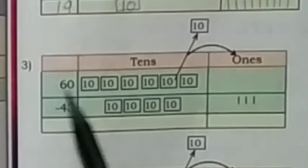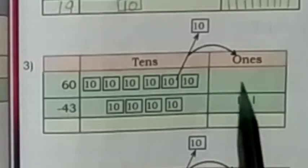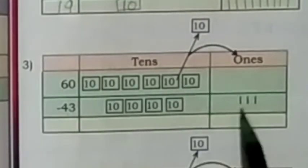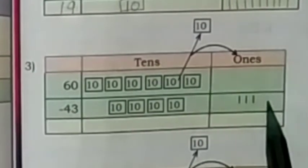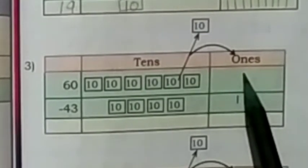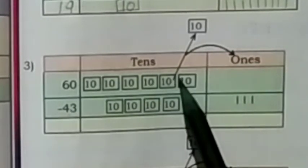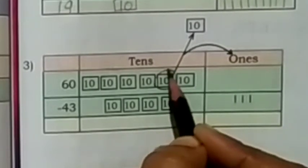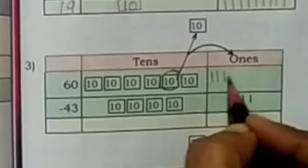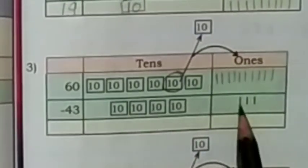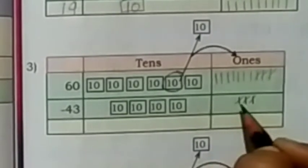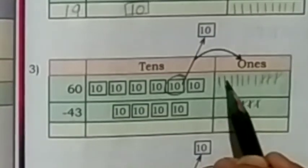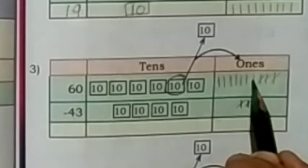Exercise number 3: now we will subtract 43 from 60. In 60, there are 6 tens and no ones. In 43, there are 4 tens and 3 ones. Now we will subtract 3 ones from 0 ones. 3 ones cannot be subtracted from 0 ones, so we borrow 1 ten from the tens place and change it into 10 ones. Subtracting 3 ones from 10 ones leaves 7 ones.